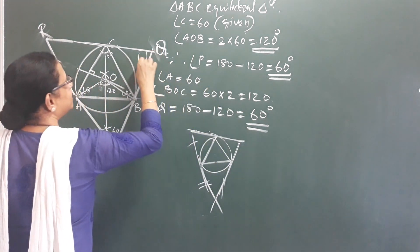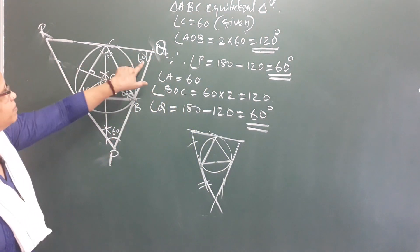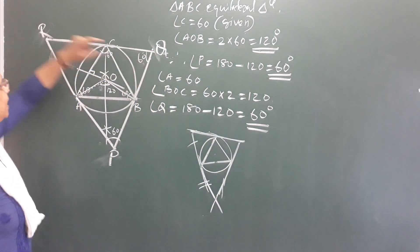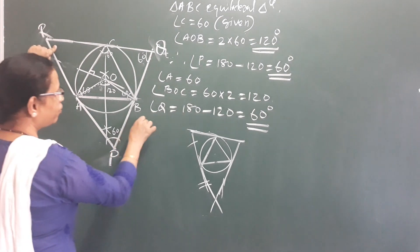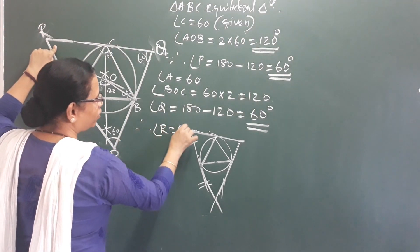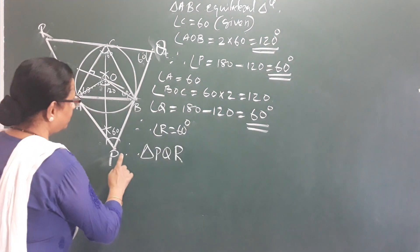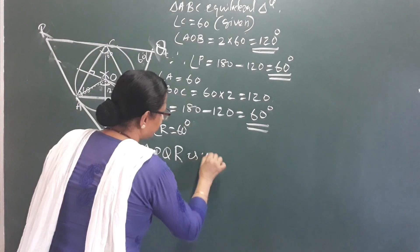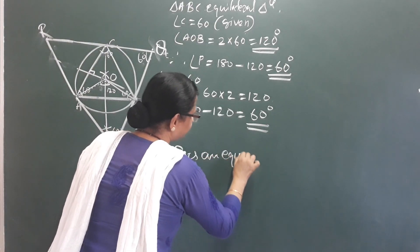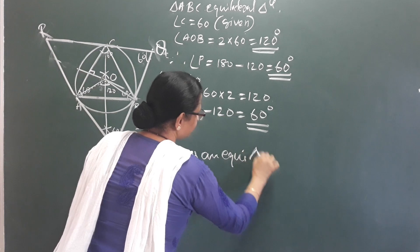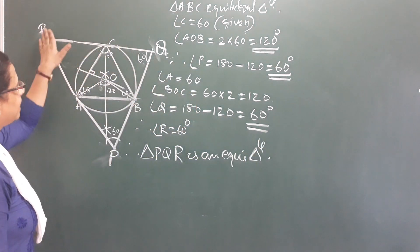That is 60 degrees. It is 60 degree angle — automatically. Therefore, angle R is equal to 60 degrees. Triangle PQR is an equilateral triangle. So, we have to prove this one equilateral triangle. We are going to prove this.